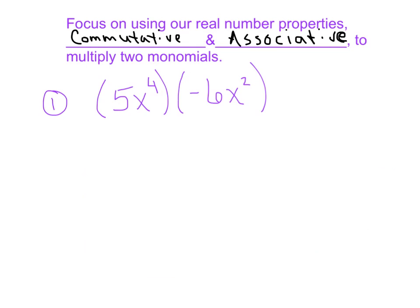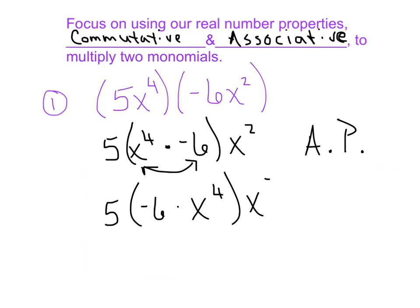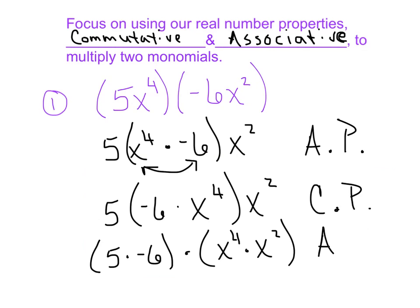I'm going to go really slow here multiplying these two monomials. First, I'm going to move my parentheses so that it surrounds x to the 4th and the negative 6 — that's the associative property. Next, I'll use the commutative property and flip these two middle terms, so I've got 5, then negative 6 times x to the 4th times x squared. Then I'll move the parentheses one more time to get 5 times negative 6, and x to the 4th times x squared — the associative property again.